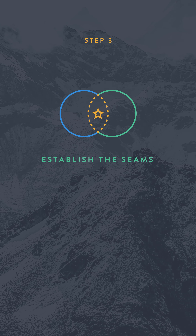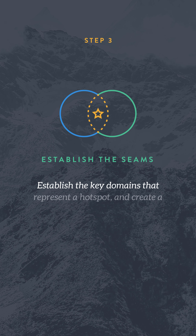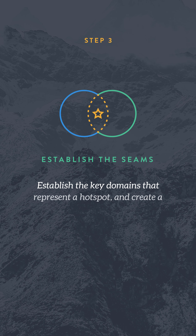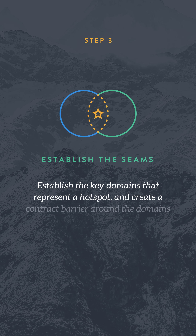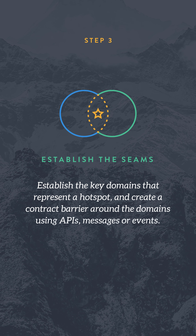Step three: establish the seams. Establish the key domains that represent a hotspot and create a contract barrier around the domains using APIs, messages, or events.